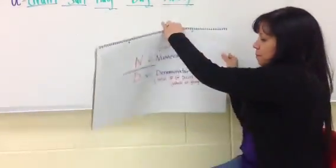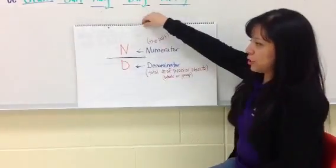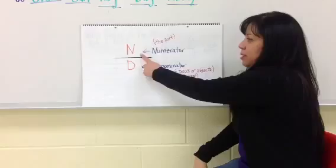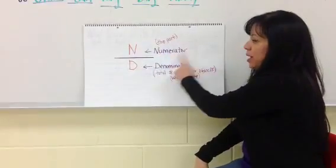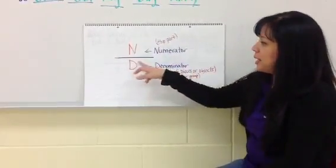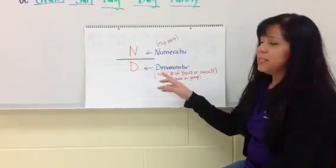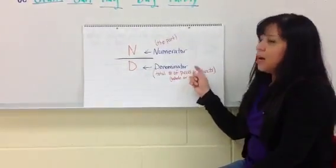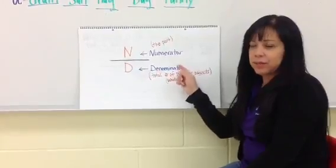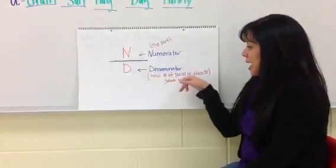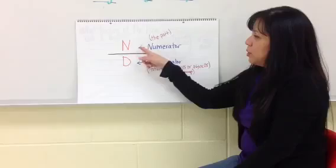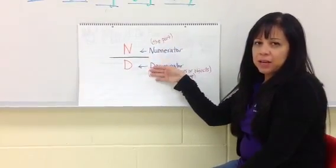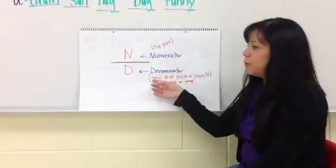When we write fractions, we write it with a numerator and a denominator. The denominator, which is the number in the bottom, tells us the total number of equal pieces or equal parts of whatever you're talking about. It has to have equal parts. It is the whole. The numerator is the part out of that whole or the fraction of the whole.